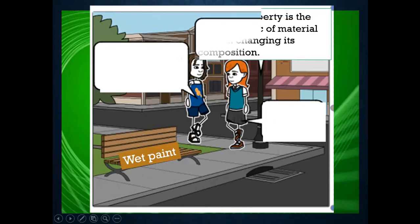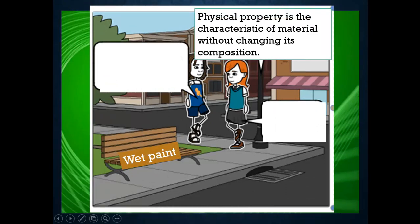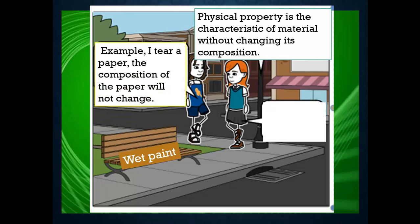Physical property is the characteristic of material without changing its composition. For example, I tear a paper. The composition of the paper will not change.